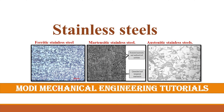Welcome to my YouTube channel, Modi Mechanical Engineering Tutorials. In this video I would like to explain in detail about stainless steels — their different kinds, compositions, and applications. Basically, stainless steels by nature or property can be classified as ferritic stainless steels, martensitic stainless steels, and austenitic stainless steels. We will see each in detail.